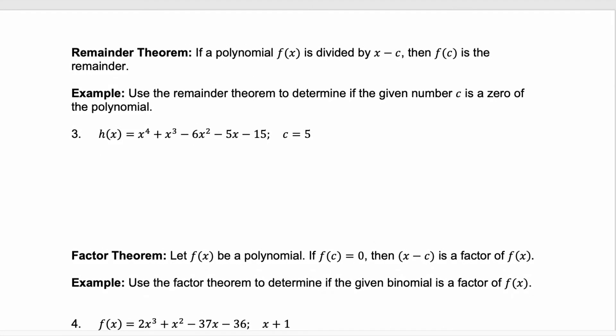Now we have the remainder theorem. The remainder theorem says that if a polynomial f of x is divided by x minus c, then f of c is the remainder. We're going to use the remainder theorem to determine if the given number c is a zero of the polynomial. I want to use synthetic division again. First, I'm going to check that my polynomial is in descending order, and it is. So I'm going to write each of the coefficients: 1, 1, negative 6, negative 5, negative 15. And we want to see if c equals 5 is a zero.